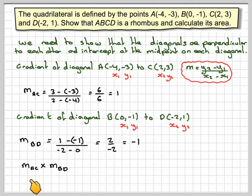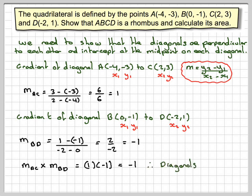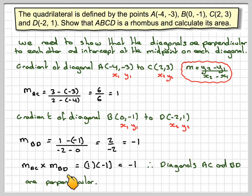The product of the gradients is 1 × (−1) = −1, which is the condition for perpendicular lines. If the product of the gradients is −1, then the diagonals are perpendicular.